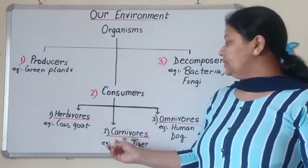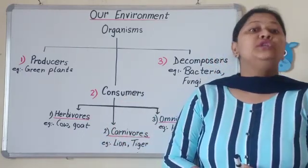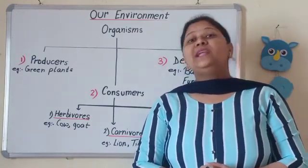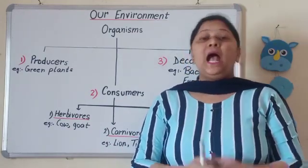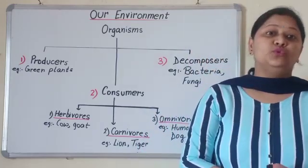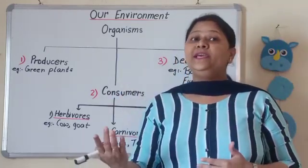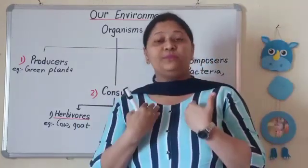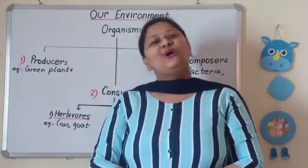When we are talking about the second type of consumers, it is carnivores - animals that eat other animals, flesh eaters. For example: lion, tiger, etc. And the third one is omnivores, animals that eat both plants and animals. For example: we humans, crow, dog, etc.